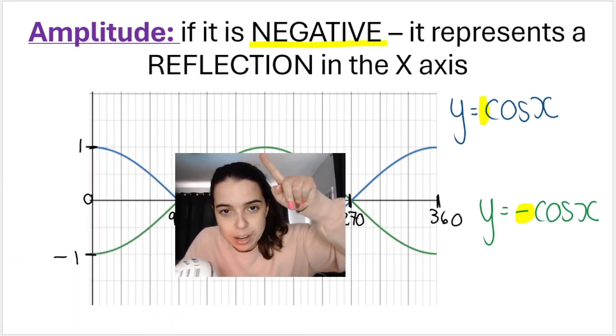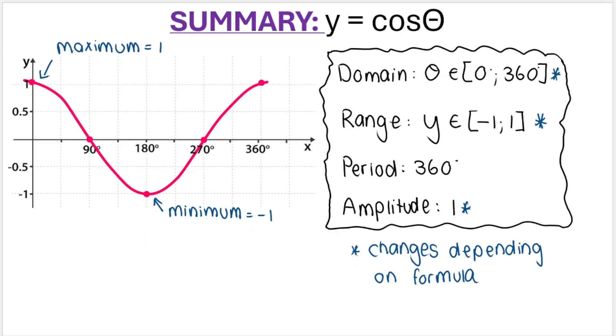So here is a summary of the cos graph. Now remember the things marked with the star can change depending on the question in terms of domain, or depending on the formula in terms of the range or the amplitude. So if we change things like we put a two in front of cos like that, that will change the amplitude; it will also change the range. So just be careful. What I'm giving you here is for the normal cos graph or for the very basic cos graph. In this question the domain was from zero to 360, but the question can really ask you for any domain. So they could say plot the cos graph for negative 180 to positive 180, and then your domain will be from negative 180 to positive 180. It really just depends on the question given. Okay, but the period will always, always be 360 in grade 10 at least.